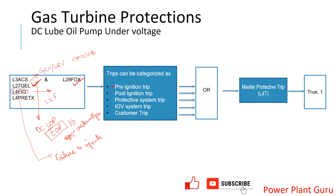When a command is given for ignition and the spark plug produces a spark, but that spark is not converted into a flame strong enough to be scanned by the flame scanner, a timer — the startup timer — begins. If the flame scanners do not detect any flame before this timer lapses, then L4FIG is activated. Combined with L28FDX already being active, these two signals together form the pre-ignition trip signal which goes to L4T.